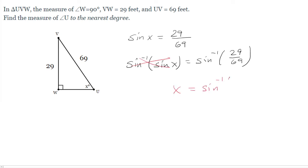So x is going to be the inverse sine of 29 over 69. And here we're looking for the nearest degree. x would be 24.853, and we would just round it up to 25 degrees. That's the measure of angle U.